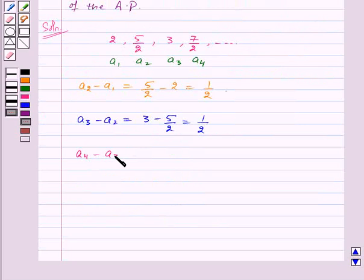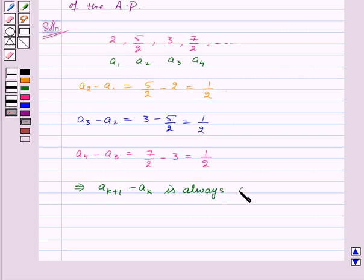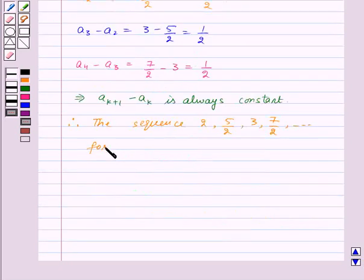Now, as we can see that the difference of the term and its preceding term is always the same, that is 1 by 2. So, we have AK plus 1 minus AK is always constant. Therefore, the sequence 2, 5 by 2, 3, 7 by 2 and so on form an AP.